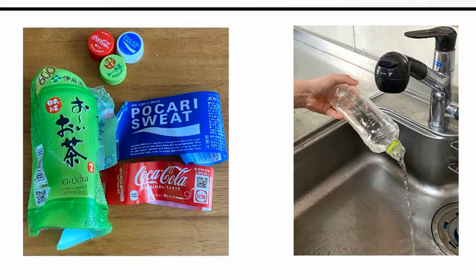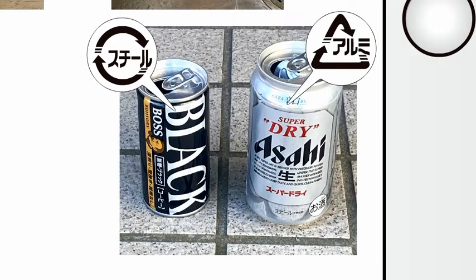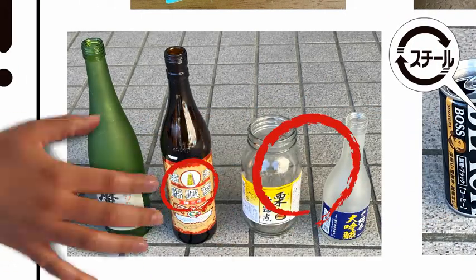The lid and label must be recycled with containers and packaging plastics. Please separate cans into aluminum cans and steel cans. Glass bottles are divided into three types: white, clear, brown, and other colors.